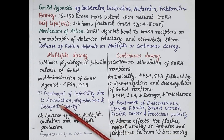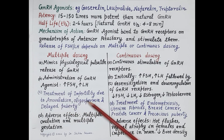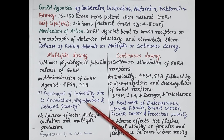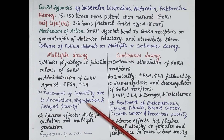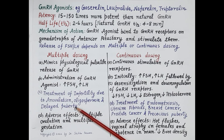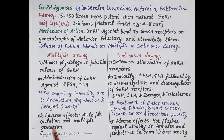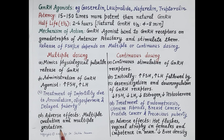Multiple dosing is used for infertility due to anovulation — that is, absence of ovulation in women — and for oligospermia, which is infertility due to low sperm count in men. This approach is also used in the treatment of delayed puberty. The main adverse effect observed during infertility treatment is multiple ovulation, which can cause multiple gestation.